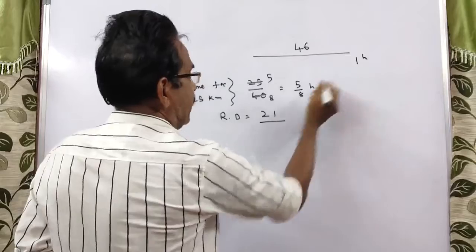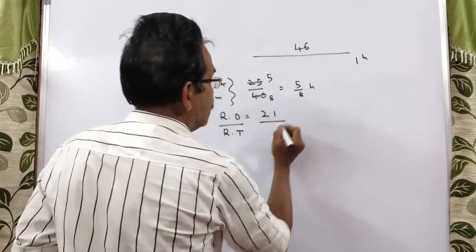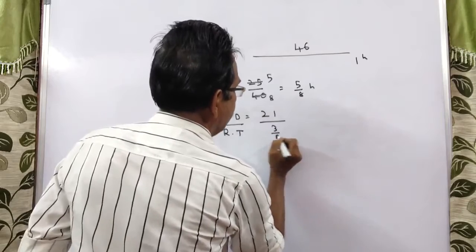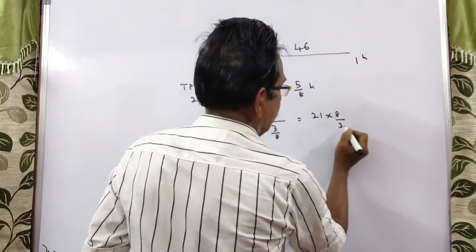And remaining time: remaining time is equal to 1 minus 5 by 8, which is 3 by 8. That is equal to 21 into 8 by 7.